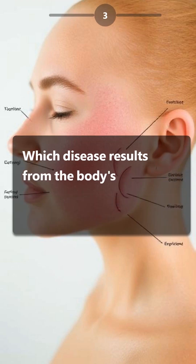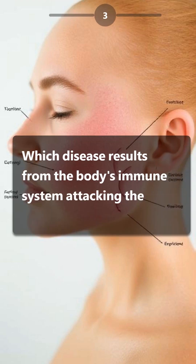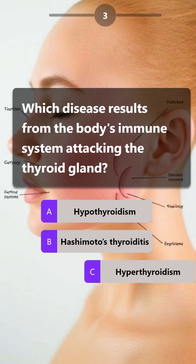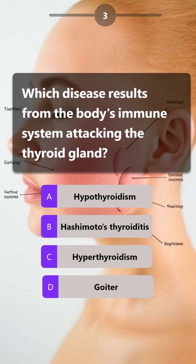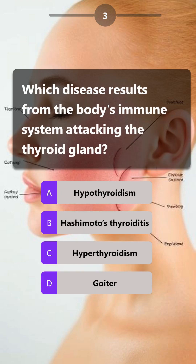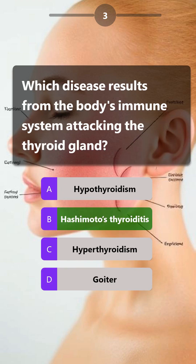Which disease results from the body's immune system attacking the thyroid gland? Hypothyroidism, Hashimoto's thyroiditis, hyperthyroidism, goiter. Answer is: Hashimoto's thyroiditis.